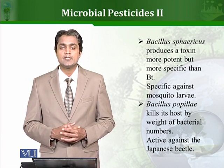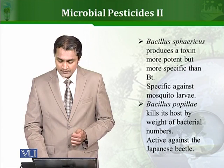Different types of bacteria and different types of microbes can kill different types of insects by different types of mechanisms. This one is active against the Japanese beetle.